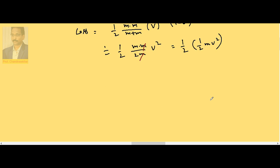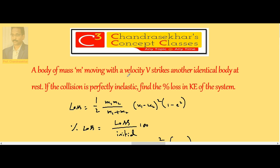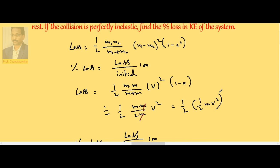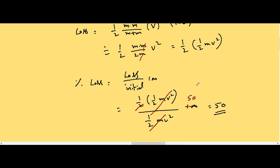Now let us calculate percentage loss. When V strikes another identical body at rest and the collision is perfectly elastic, then the system will lose 50% of its kinetic energy.